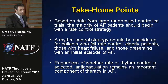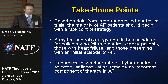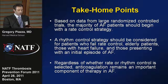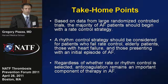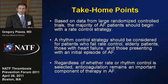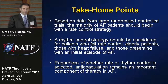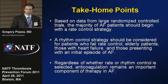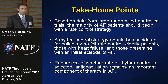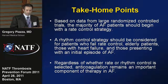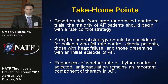In summary, based on data from large randomized controlled trials, the majority of atrial fibrillation patients should begin with a rate control strategy. A rhythm control strategy can be considered in patients who fail rate control, in a subset of elderly patients, patients with heart failure, and those presenting with an initial episode of atrial fibrillation. Regardless of whether rhythm control is selected, anticoagulation remains one of the most important components of therapy for atrial fibrillation.